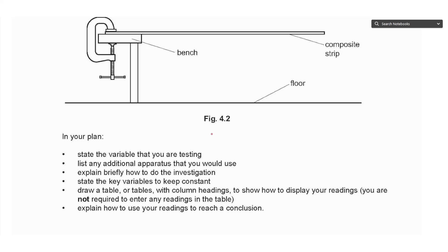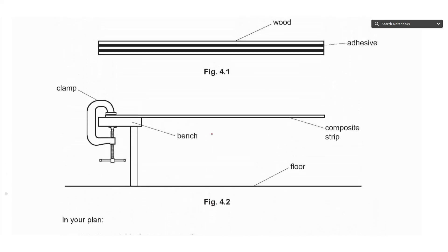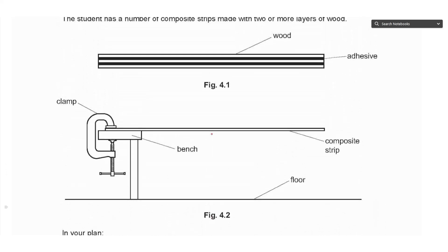In your plan, state the variable that you are testing as an independent variable, list any additional apparatus, explain briefly how to do the investigation, state the key variables to keep constant. Here we can say that we will test the number of layers of the strip. For the dependent variable, the amount of bending, we can measure the distance fallen by the edge of the strip.